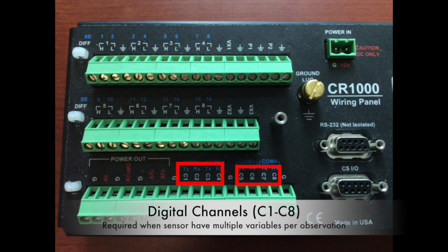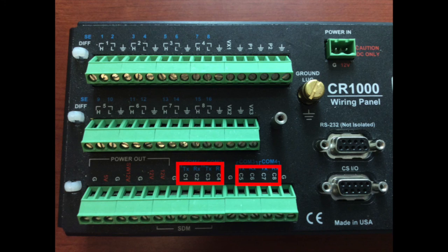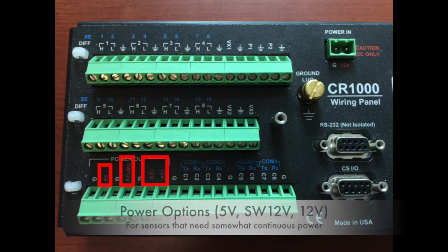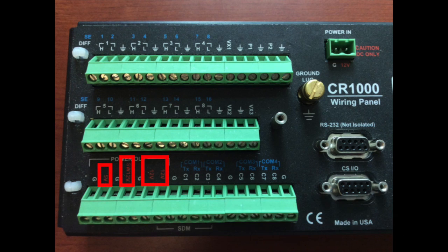Then you have digital channels, located on the very bottom, C1 through C8. These digital channels are able to report back multiple parameters from the same sensor. A WXT520 is a perfect example — one output that sends back all six parameters. We also have different power outlets on the left side: two continuous 12-volt channels, a switched 12-volt channel, and a 5-volt channel. The 5-volt channel is for precipitation, and the switched 12-volt is for sensors that need power turned on and off.